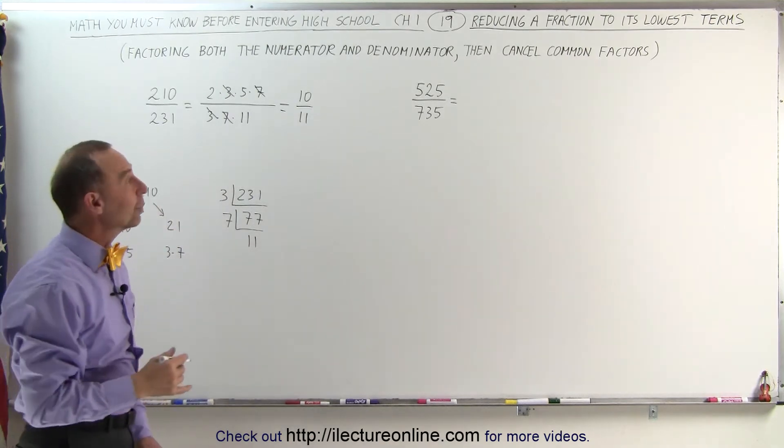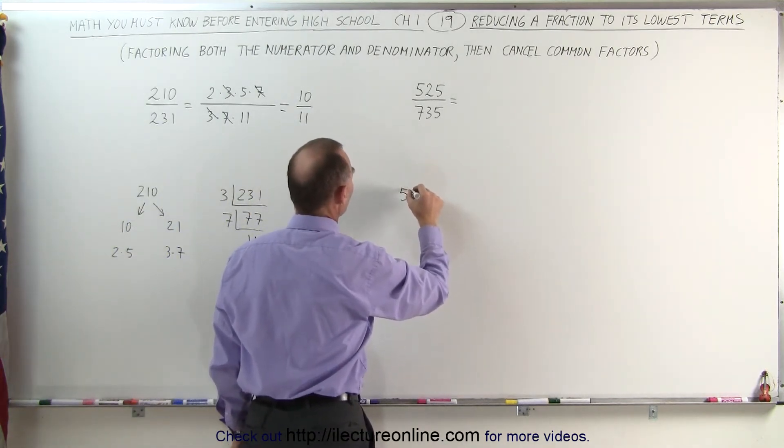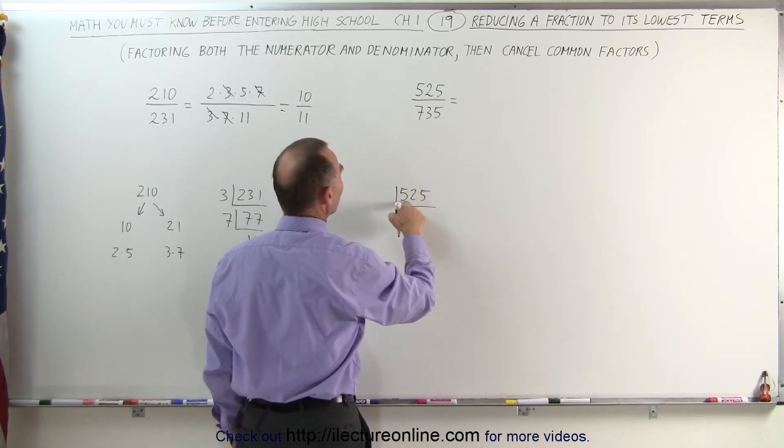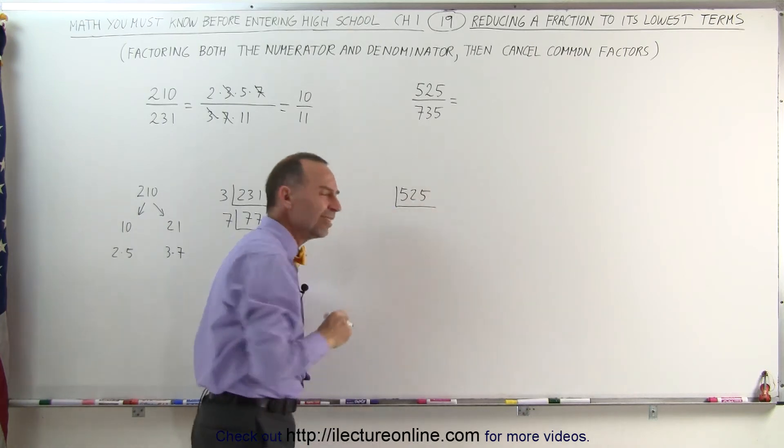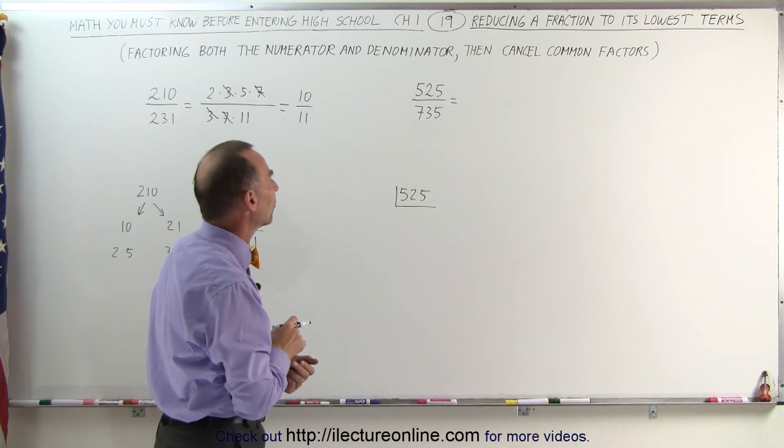The next fraction, again, we can do the same thing. We can take the numerator and find all of its factors. First, we can divide this by, let's see here, if we add these together, 5 plus 5. But you know what? Since it ends in a 5, I'm going to start with dividing it by the number 5.